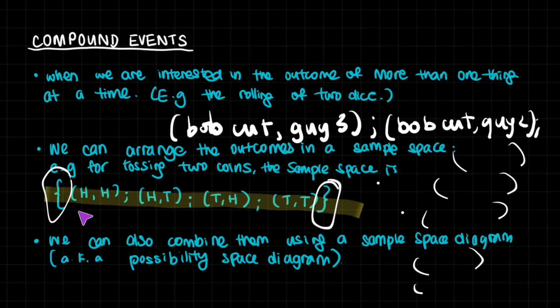And this makes it easy, for instance, to note that heads heads is one out of four. Minimum one head is actually one, two, three, three out of four, for instance.